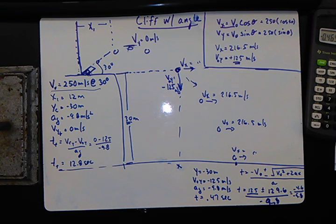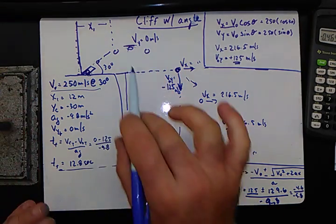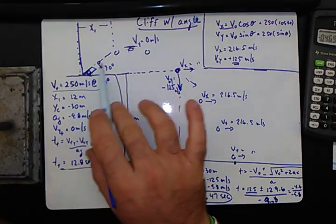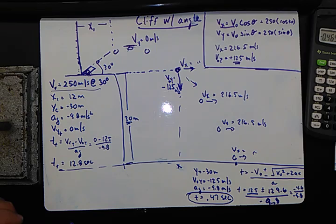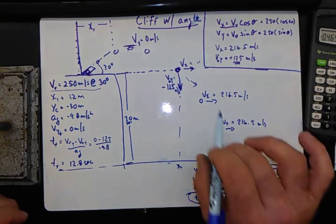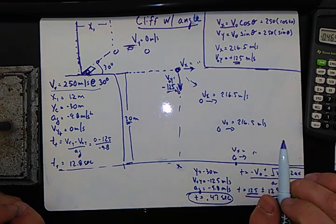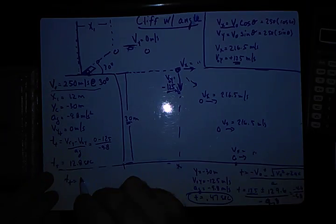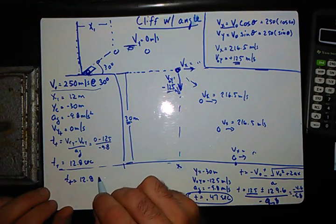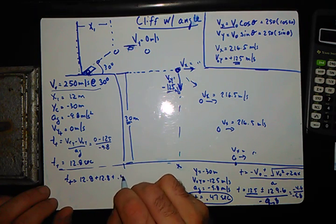That's 0.47 seconds for the rest of the trip. So let's reconvene here. Alright, so the time it takes to get to here is 12.8. The time it takes to get from here is another 12.8. And the time it takes to fall the additional 30 meters is about a half a second, because it's going fast at that point. So, we've got time total equals 12.8 plus 12.8 plus 0.47.